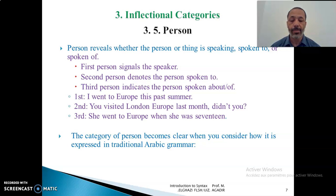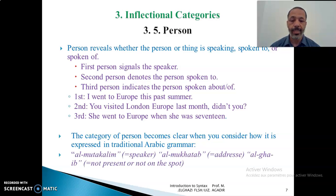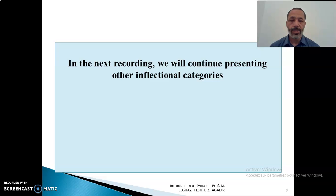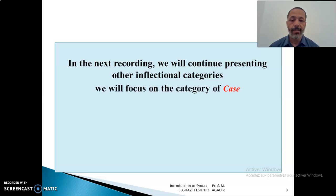The category of person becomes clear when you consider how it is expressed in traditional Arabic grammar: al-mutakallim (the speaker), al-mukhatab (the person to whom you are speaking), and al-gha'ib (the person who is not present). So in this lecture, after defining inflectional categories, we have seen three types: person, gender, and number. In the following lecture, we are going to see the inflectional category of case. Thank you very much and see you then.